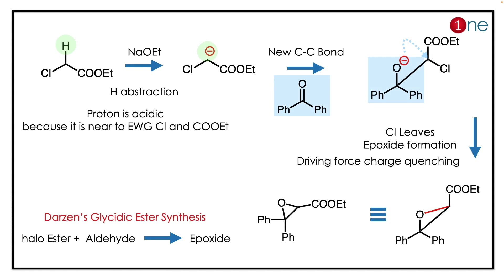The named reaction is the Darzens glycidic ester synthesis. In the first step, the base abstracts the acidic proton, because it is attached to two electron-withdrawing groups, forming a carbanion.